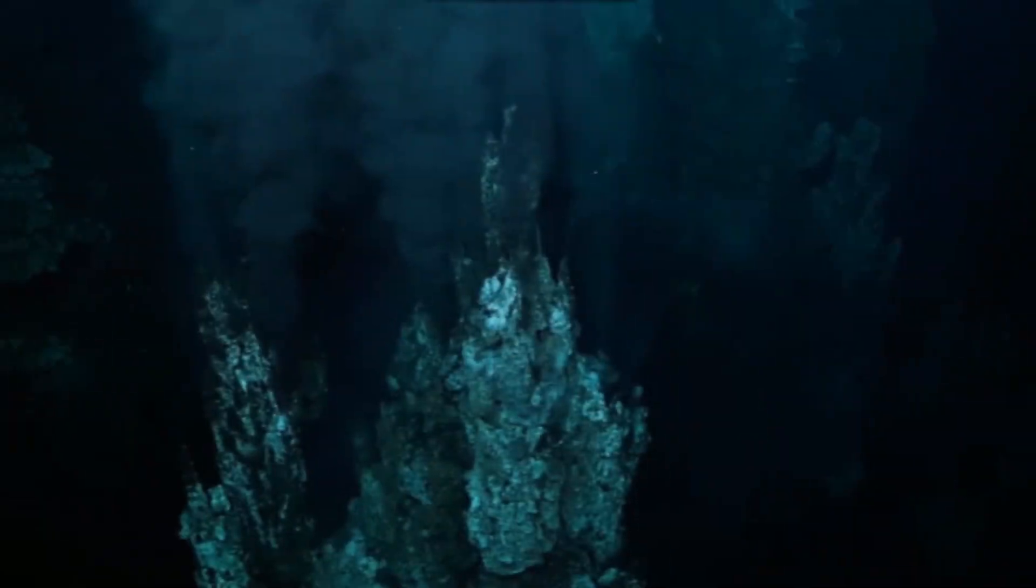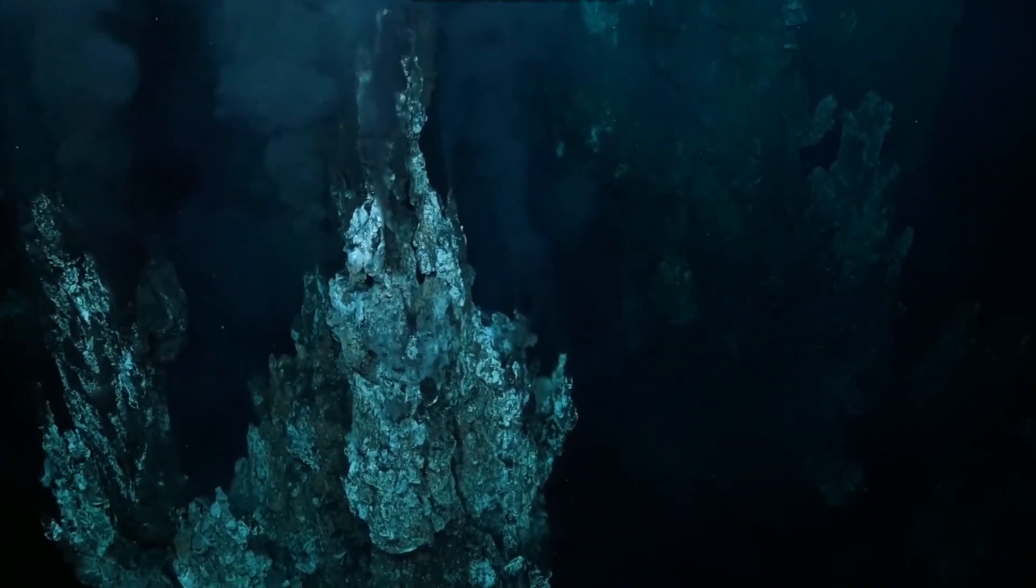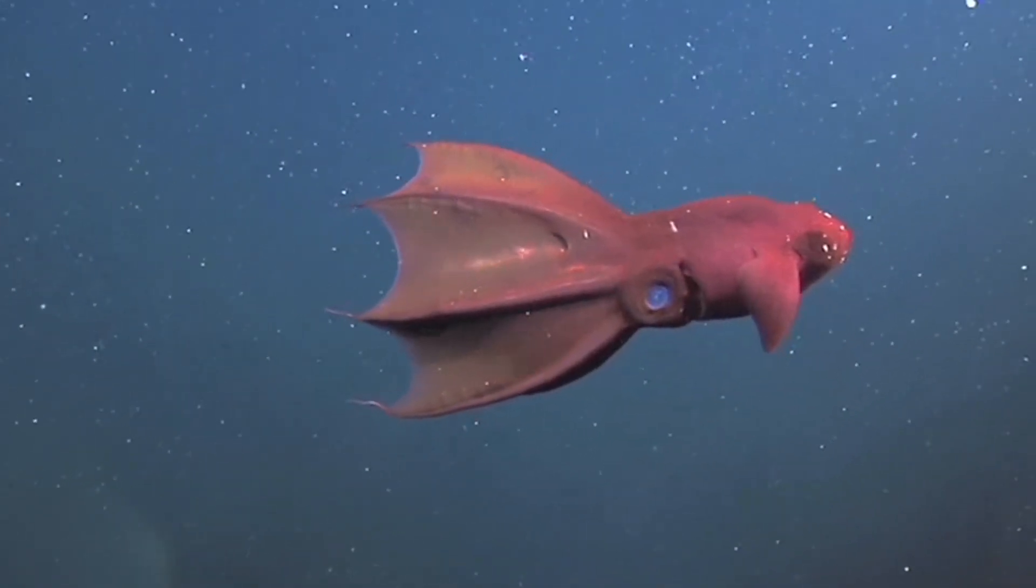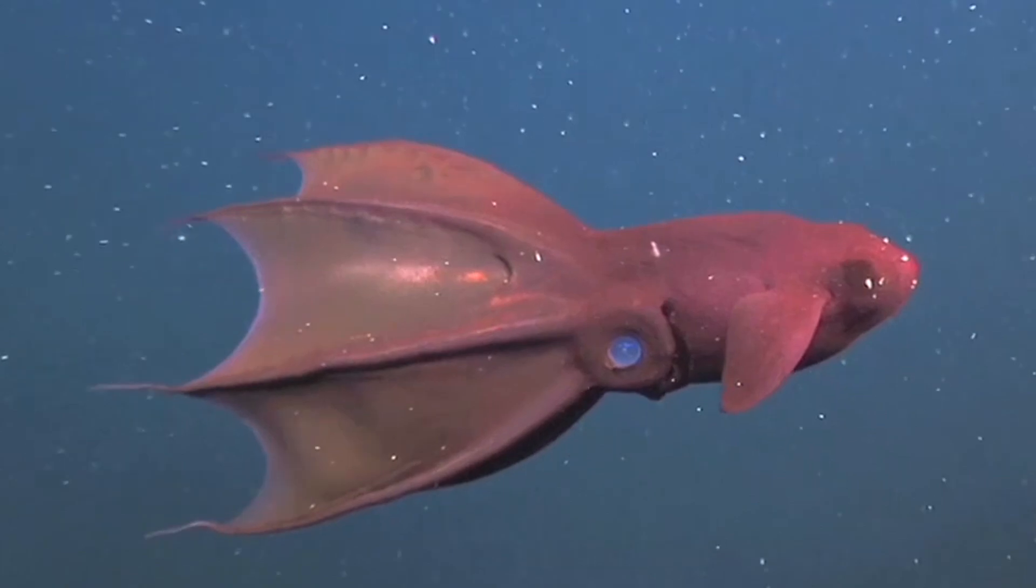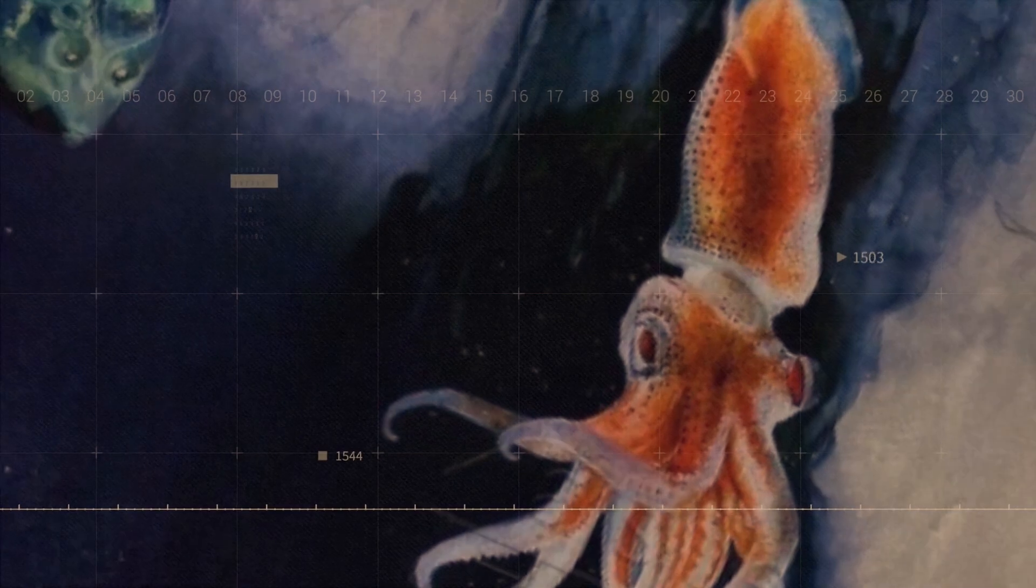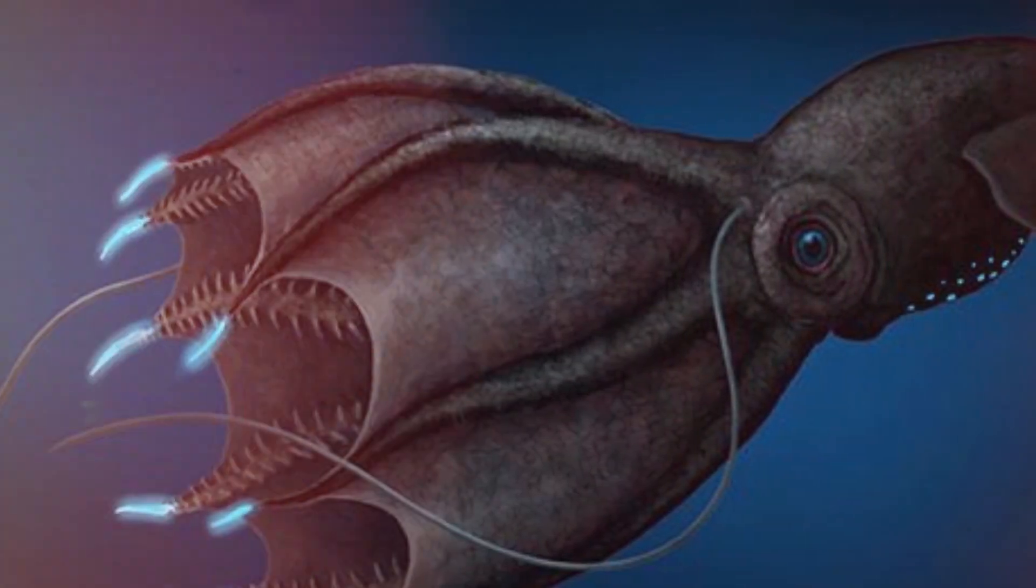While some creatures use bioluminescence to hunt, others employ it as a means of defense. In the deep sea, a well-timed flash of light can mean the difference between life and death. Consider the vampire squid, a creature that looks far more fearsome than it actually is. When threatened, this cephalopod can eject a cloud of bioluminescent mucus into the water. This glowing cloud serves multiple purposes. It disorients and confuses predators, giving the vampire squid a chance to escape.